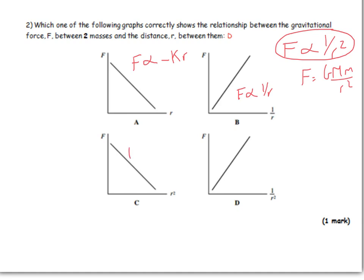We've got this one, F is proportional to minus R squared. Then we've got F is proportional to 1 over R squared shown by this one. So we get the answer being D. This is the only one that shows the correct relationship there.